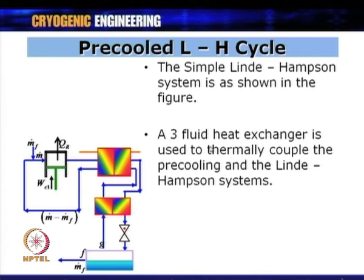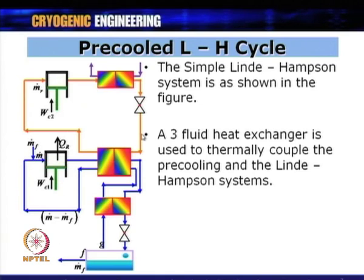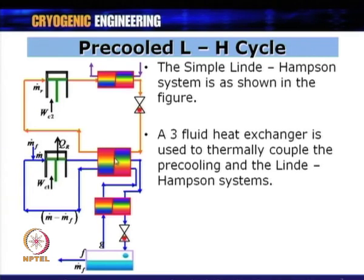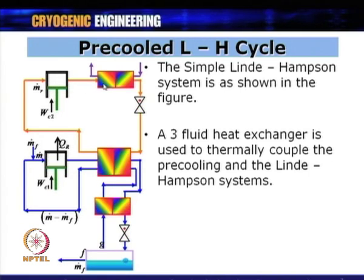The pre-cooling circuit has its own refrigerant with a compressor (compressing mass flow rate m_dot_r, requiring power WC2), a condenser (air-cooled or water-cooled), a JT valve, and the pre-cooling heat exchanger. The compression in this circuit is assumed to be adiabatic, unlike the isothermal compression assumed for the main Linde-Hampson cycle.